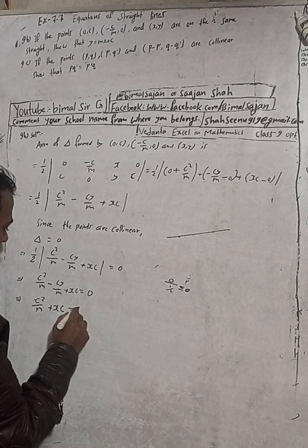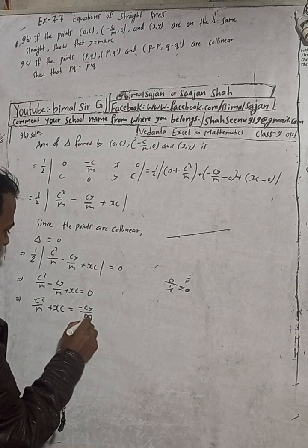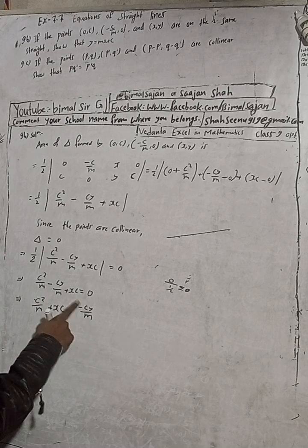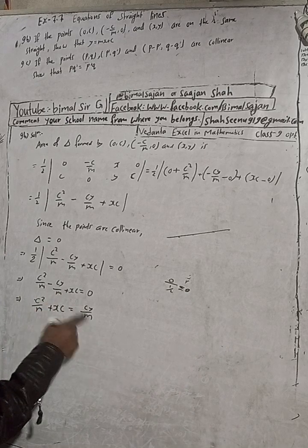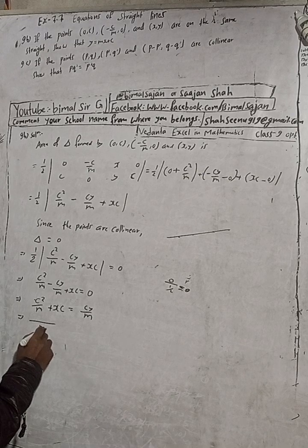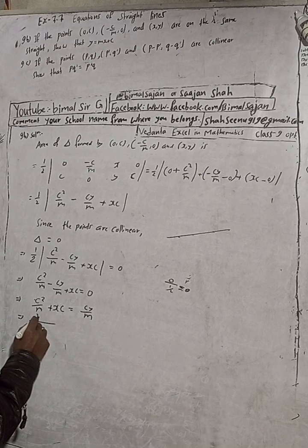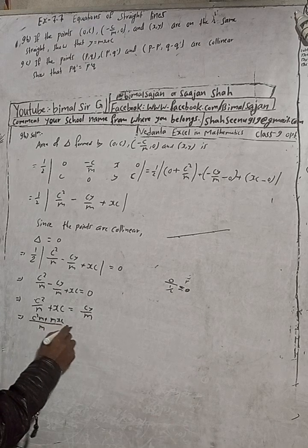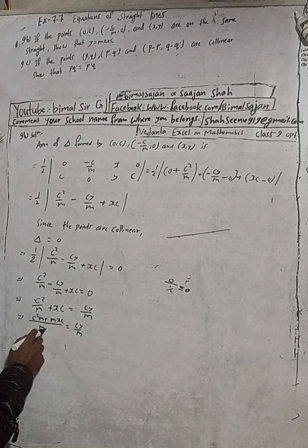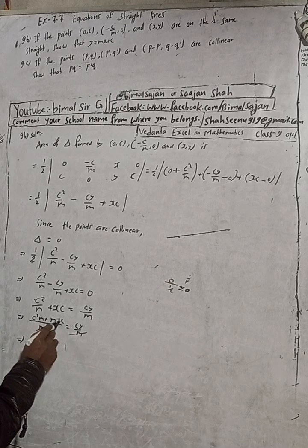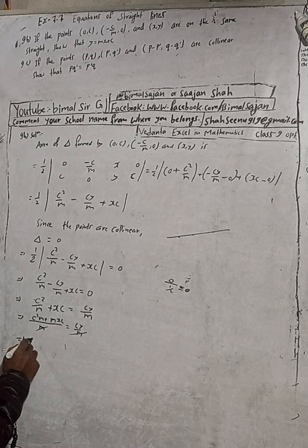So C²/m plus mxC equals Cy/m. When I take the LCM, this becomes C² + m²xC equals Cy. Now C is common, so C times [C + mx] equals Cy. C cancels.